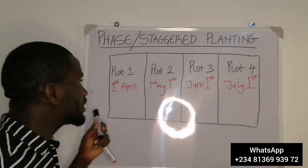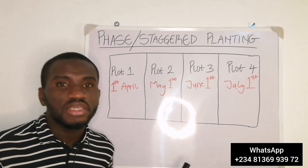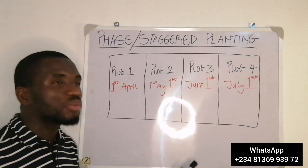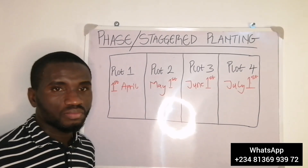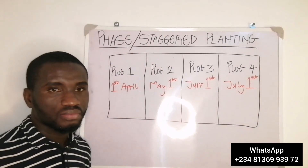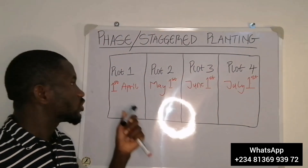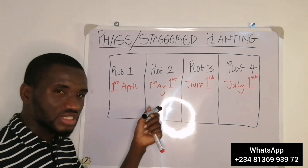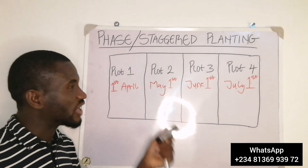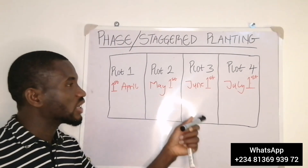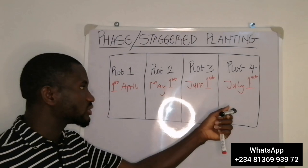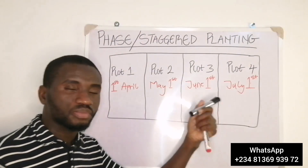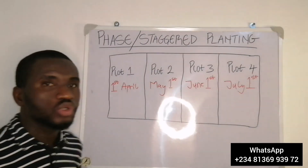The implication of this is that your harvesting will not be happening at the same time. You will harvest the first plot, then after a month the second plot, after a month the third plot, and after a month the fourth plot.